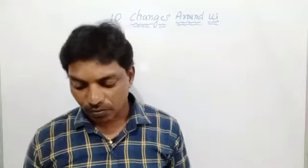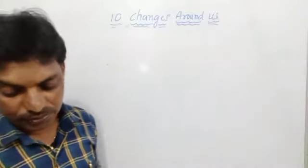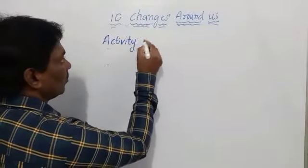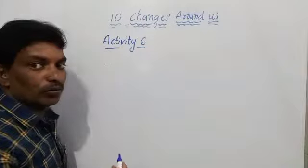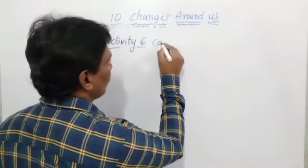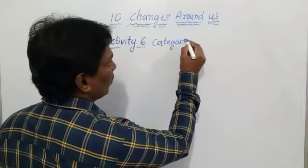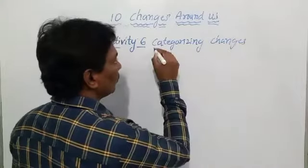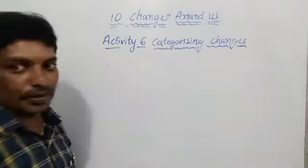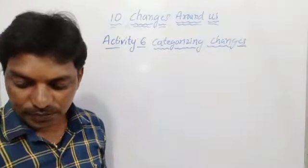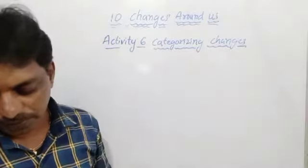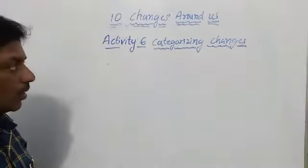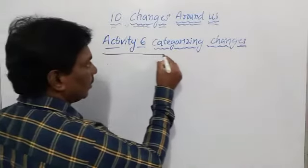Our activity number six is categorizing changes. Now we are going to discuss categorizing changes. For this we need to draw a table in which we want to write all the information. I am going to draw this table and explain clearly one after another.